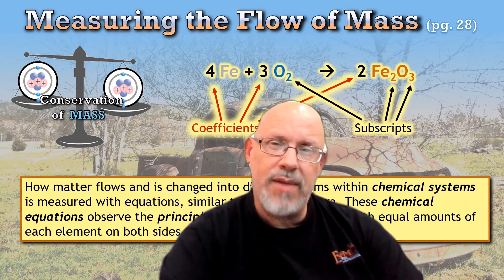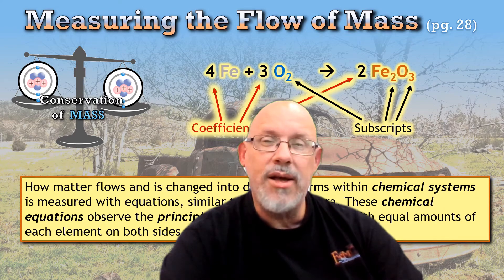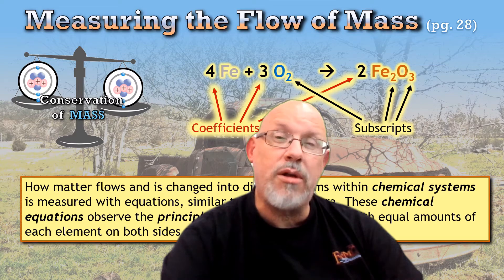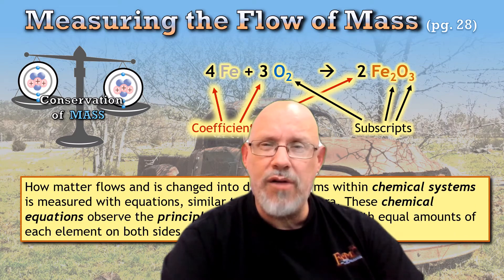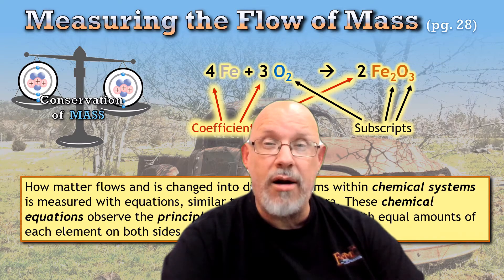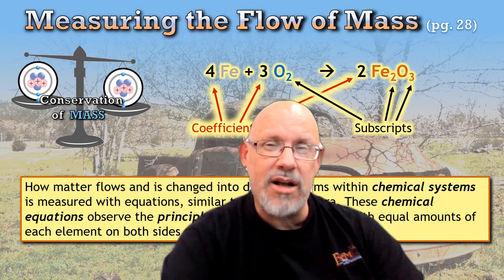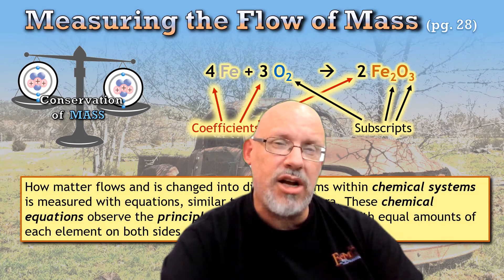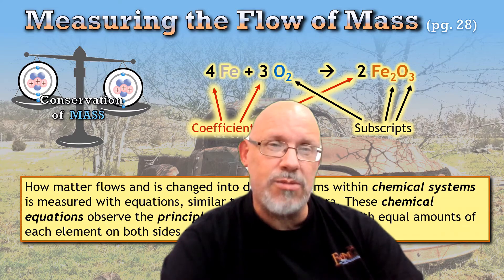The flow of mass described on page 28 is just the textbook's way of talking about keeping track of what the atoms are doing. And to do that, we use these chemical equations. And the key thing is that they must observe the principle of conservation of mass that I mentioned at the beginning of this video. How matter flows and how it is changed into different forms within chemical systems, we measure them with these equations, similar to the equations we see in algebra. These chemical equations observe the principle of mass conservation. And look carefully. Look carefully indeed, because if you look at the equation, you'll see that there are four irons on both sides of the equation. And there are six oxygens on both sides as well. If mass conservation is going to be observed, and we're going to follow that principle, then there should be equal amounts of each element on both sides of the equation before and after the reaction takes place.